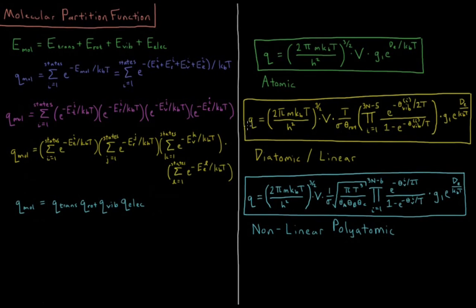For diatomic and linear molecules, the partition function is translational × rotational × vibrational × electronic. The translational component is (2πmkT / h²)^(3/2) V, and the electronic part is g₁ e^(D_e / kT). The rotational part is T / (σ θ_rot), where θ_rot is the rotational temperature obtained from the molecular structure, and σ is the symmetry number — 2 for homonuclear diatomics and 1 for heteronuclear diatomics. For each vibrational mode, the contribution is e^(−θ_vib,i / 2T) divided by (1 − e^(−θ_vib,i / T)), noting the factor of 2 in the numerator but not the denominator.